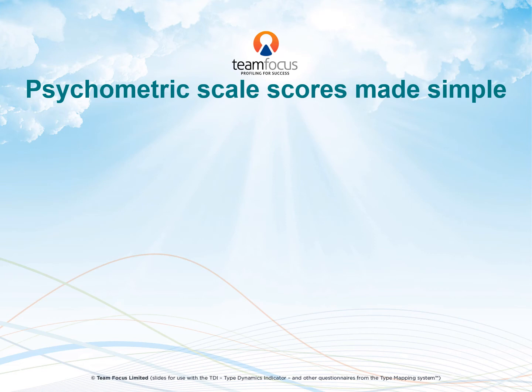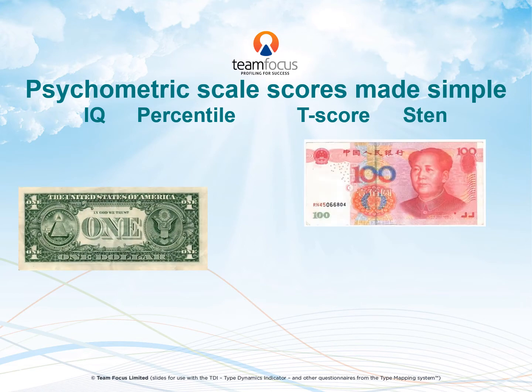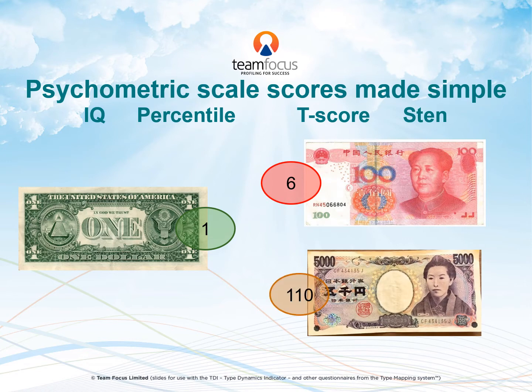Hello, my name is Roy Childs from TeamFocus. In this video I will explain how nearly all psychometric scores are just like different currencies. They have different names and different values, but one can be aligned with another. So one US dollar may be worth up to six Chinese Yuan, or it could be a hundred and ten Japanese Yen.